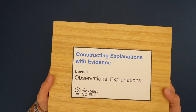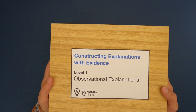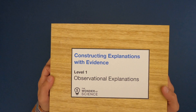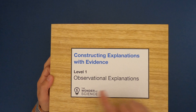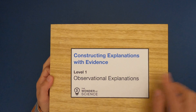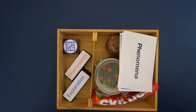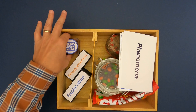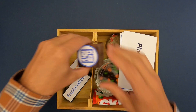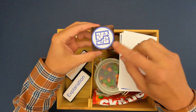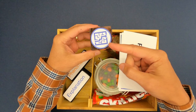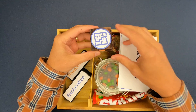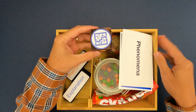Hi, it's Mr. Andersen and this is a mini lesson on constructing explanations with evidence — level one observational explanations. The icon for explanations is this puzzle that's solved, and that's essentially what an explanation is.